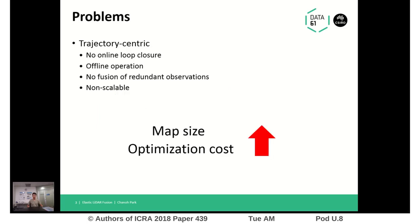However, there is a significant problem with this approach. To maintain a globally consistent map, it needs to collect all the data and run a global optimization at the end. Furthermore, without post-processing, we will be left with spatially redundant map elements. So without doing anything, the map size and global optimization costs increase over time.